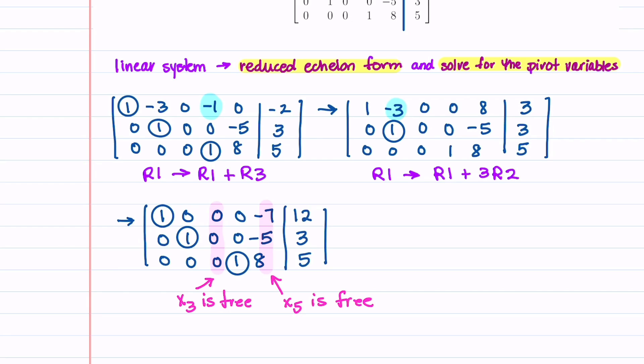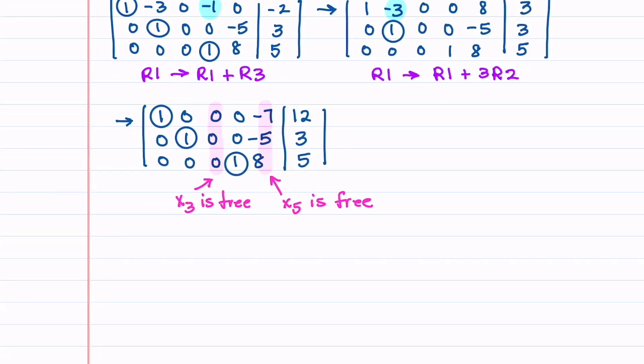Now what we're going to do is we're going to solve for our pivot variables. So our first pivot variable here is x1. So we have x1 minus 7x5 is equal to 12. And I said we're going to solve for x1. So here it goes. So x1 is going to be 12 plus 7x5. Now we're going to go ahead and we're going to solve for x2. So we're going to write down x2 minus 5x5 is equal to 3. So that tells us that x2 is 3 plus 5x5.